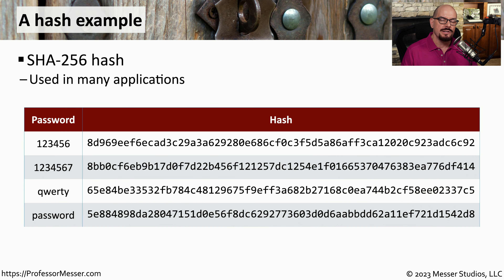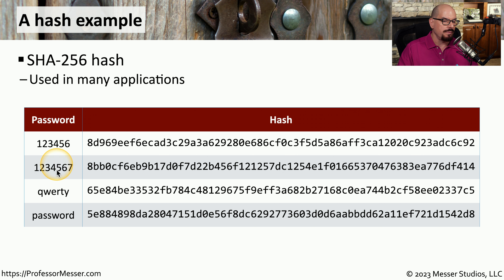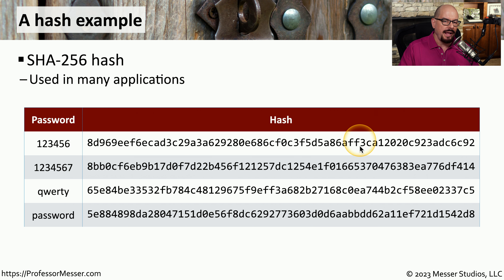Here's an example of what these passwords would look like if we stored them with a hash instead of storing them as plain text. On the left side of this list are the passwords, and on the right side is a hash being created with the SHA-256 hashing algorithm. You can see that the password 123456 is stored as one hash, and the password 1234567 appears as a very different hash. Notice that although the password itself is only one character difference between the two, the two different hashes are very different from each other.